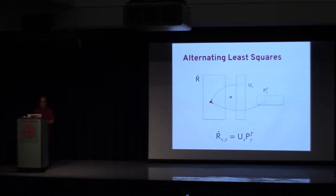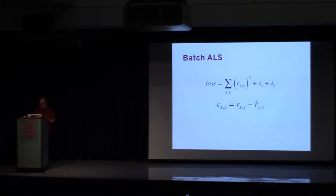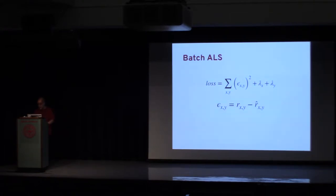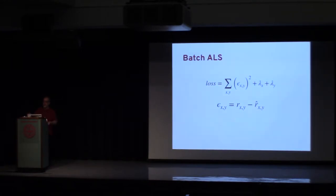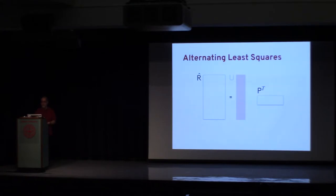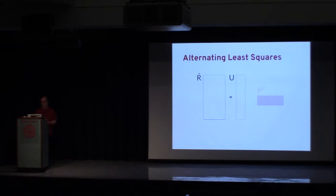One classical way of doing this is the batch method. The factorization is done by defining a loss function with an error term — the difference between actual ratings and predictions — plus regularization terms. This loss function has to be minimized. Using ALS, this minimization problem has a closed-form solution: you set the derivatives of the loss function with respect to U and P to zero, getting a nice set of linear equations you solve by iteration. You fix one factor matrix and solve for the other, then alternate, eventually converging to a very good approximation of the ratings matrix.